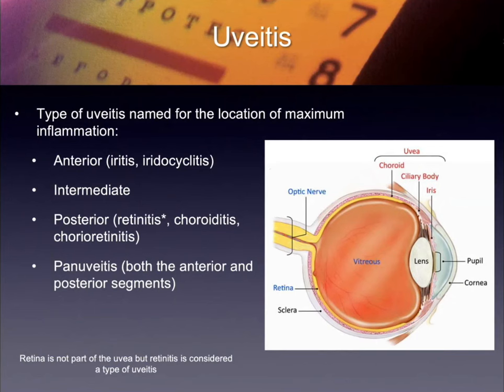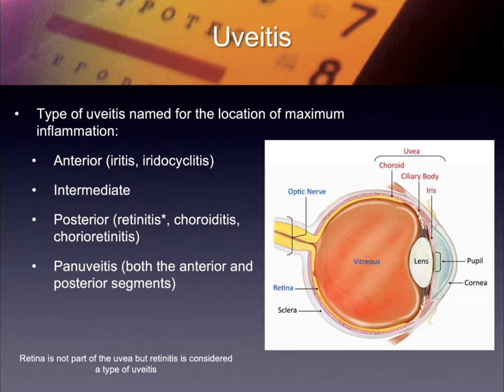How many of you have been asked about treating a uveitis in the last couple of years? You need to understand what the uvea is. It's actually comprised of the iris, the ciliary body, and the choroid. And even though it's not really part of it, for part of the discussion with uveitis they include the retina. So it's really the internal coating of the eye. Some of it's behind the lens, and you can have a pan-uveitis where just everything is inflamed.